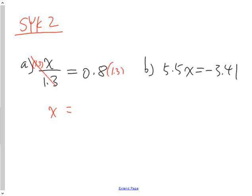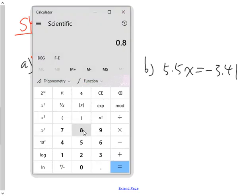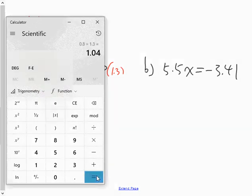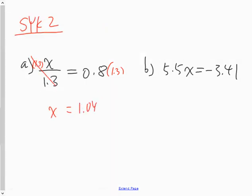Over here I need a calculator. 0.8 multiplied by 1.3 is equal to 1.04, which is your solution. x equals 1.04.